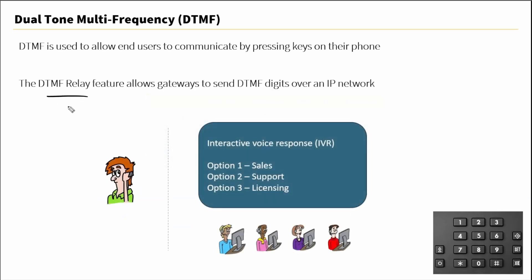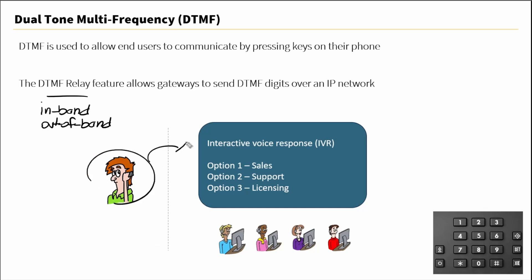With DTMF relay, this allows us to transmit those digits over an IP network. This can be in-band, so within the media, or out-of-band — that being outside of the media but within the signaling. With DTMF relay, it allows a user to call into an IVR, then choose option 1, 2, or 3, and have that digit press be recognized and therefore routed to the appropriate personnel.